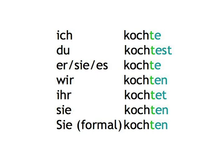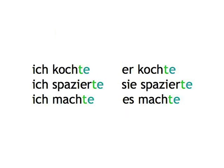But as you can see, there's one difference from the present tense endings, and that is the third person singular, where German uses the same e-ending as in the first person. For example: ich kochte, er kochte; ich spazierte, sie spazierte; ich machte, es machte.